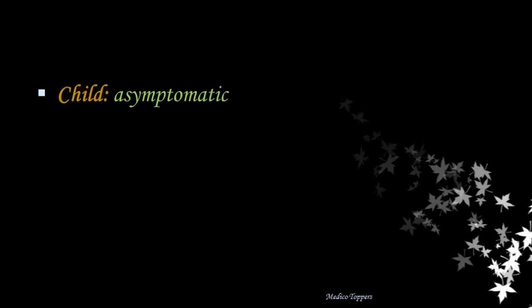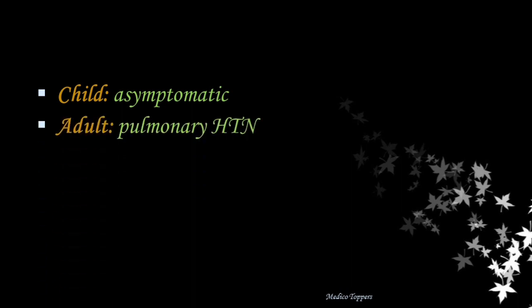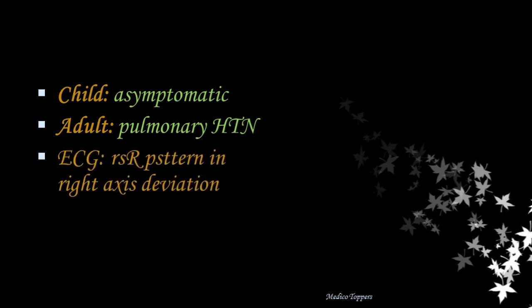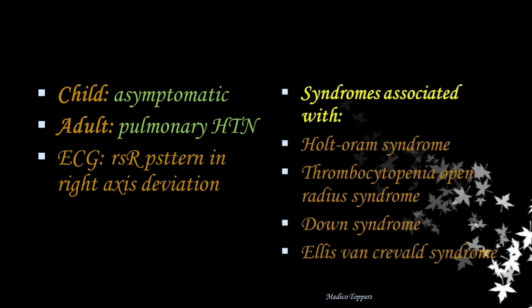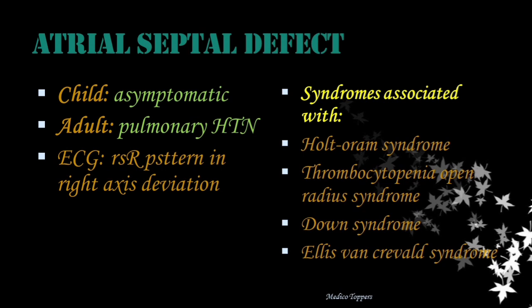This condition in children will be asymptomatic, and in adults they may present with pulmonary hypertension. On ECG we get RSR pattern with right axis deviation. Associated syndromes include Holt-Oram syndrome, thrombocytopenia absent radius syndrome, Down syndrome, and Ellis-van Creveld syndrome. These clues identify the condition as atrial septal defect.